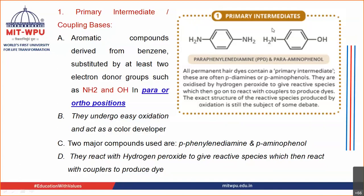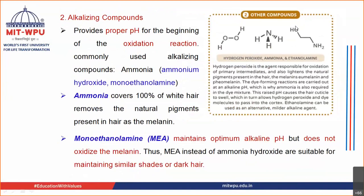PPD and paraaminophenol react with hydrogen peroxide and give reactive species — intermediate species — which then react with the coupler to produce a dye. The alkalizing agents — ammonia and ethanolamine — provide the proper pH for the oxidation reaction and for the dye formation reaction. Ammonia also helps to cover 100% of the white hair because it removes the natural pigment.